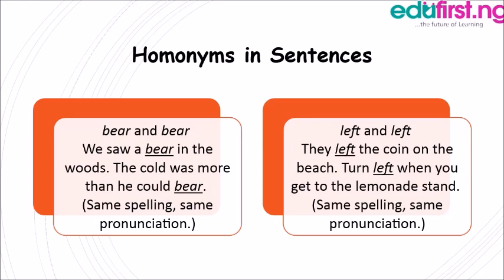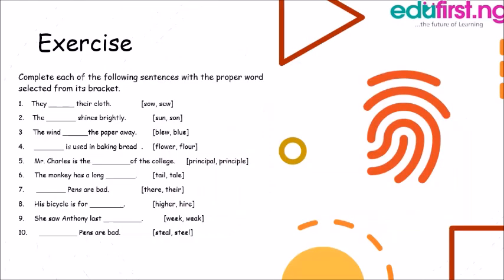Another example is the word 'left': 'They left the coin on the beach' and 'Turn left when you get to the lemonade stand.' You can see another example of words with the same spelling and same pronunciation but different applications. Now you understand what we call homonyms.